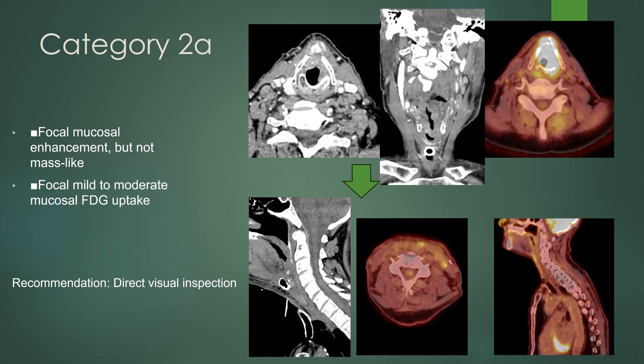Category 2A: the scan demonstrates focal mucosal enhancement, but not mass-like. There could also be mild to moderate FDG uptake, but you don't want it to be mass-like. In this case, if possible, you recommend direct visualization.